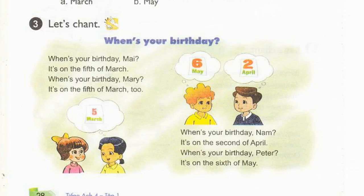Page 28, Activity 3. Let's chant. When's your birthday? 1, 2, 3, 4 — when's your birthday? It's on the 5th of March. When's your birthday, Mary? It's on the 5th of March. When's your birthday? It's on the 2nd of April. When's your birthday, Peter? It's on the 6th of May.